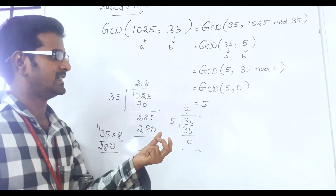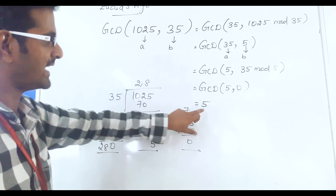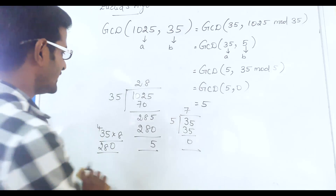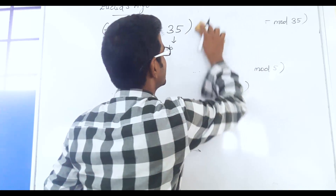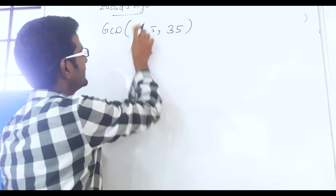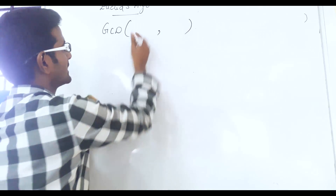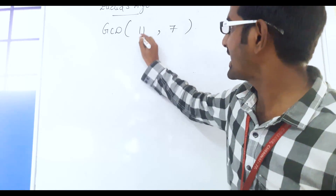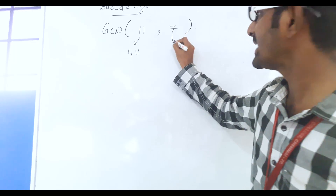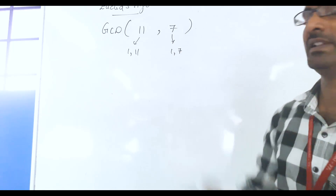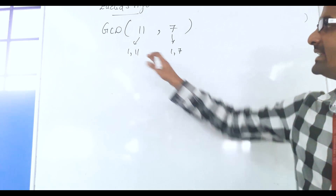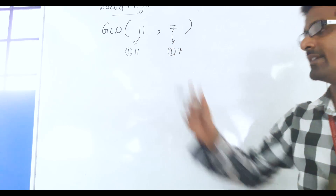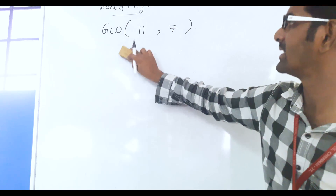Sometimes we will get 1 as the GCD. In this example, 5 is the biggest number that can divide both 1025 and 35. Now we will take an example where A = 11 and B = 7. We know that 11 can be divided by 1 and 11 only, and 7 can be divided by 1 and 7 only, because these two are prime numbers. So 1 is the only number that can divide both 11 and 7. Let's check how Euclidean's algorithm works in this case.